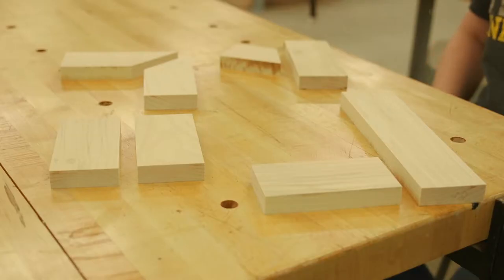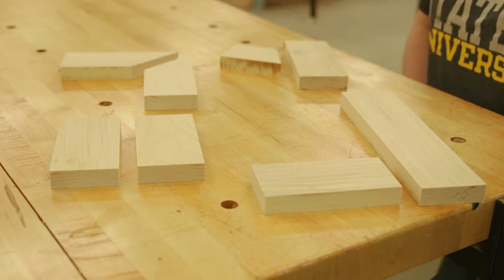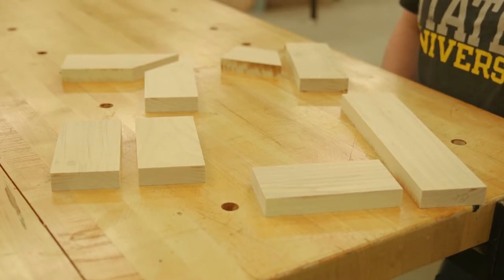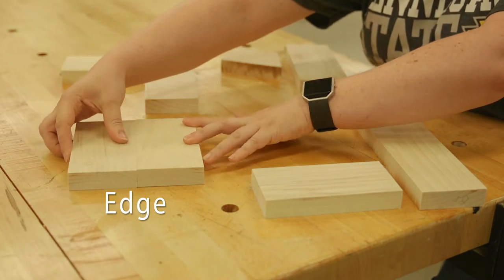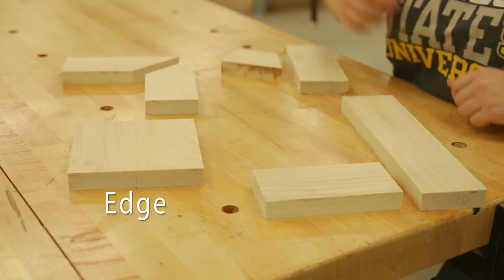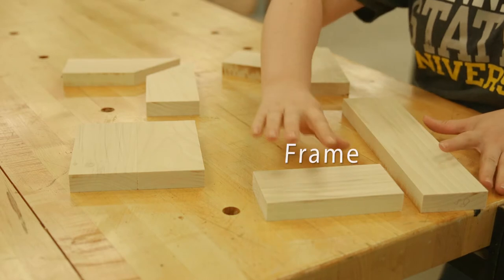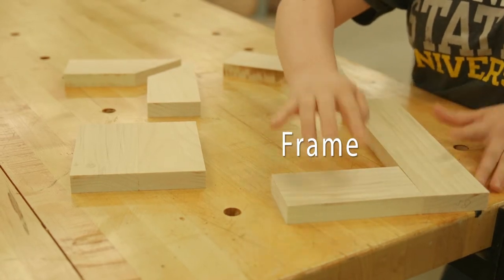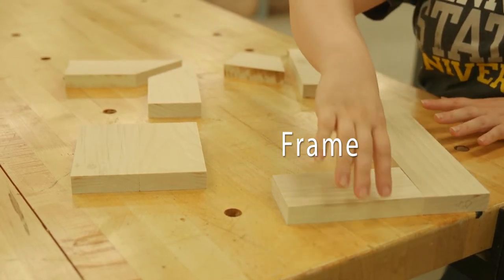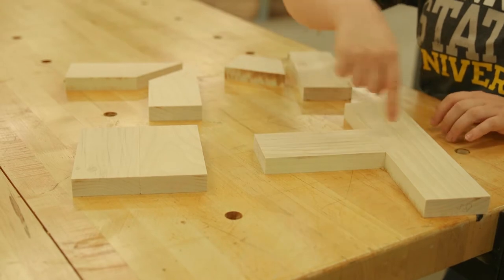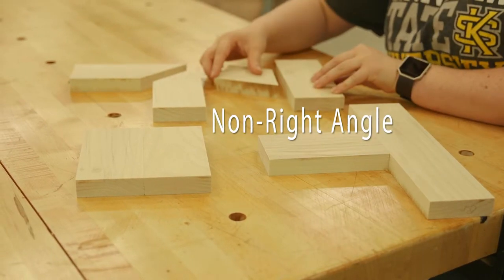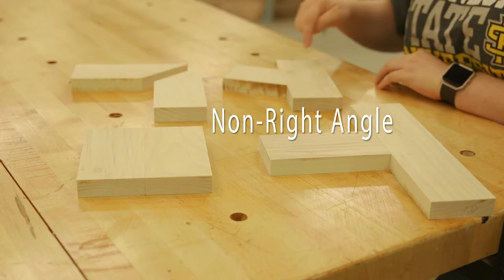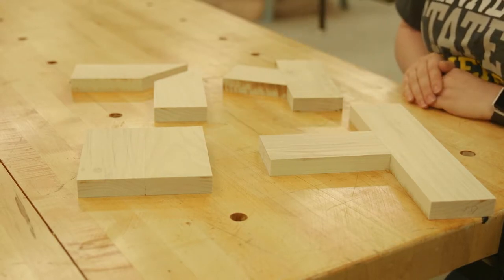Different configurations or variations of the butt joint include the following examples. The edge butt joint joins side grain to side grain. The frame butt joint joins end grain to side grain and can be used to make either a corner or a tee configuration. The non-right angle butt joint also joins end grain to side grain but at an angle other than 90 degrees.